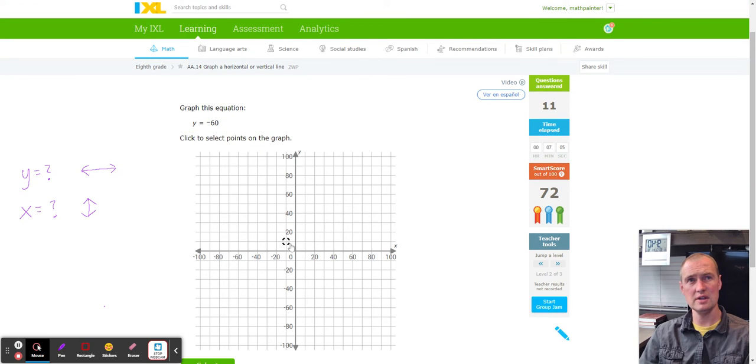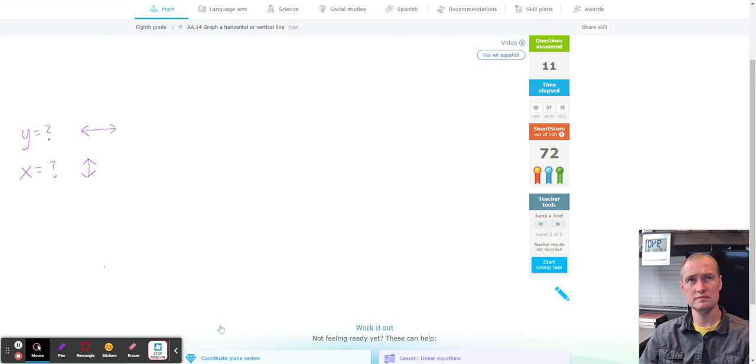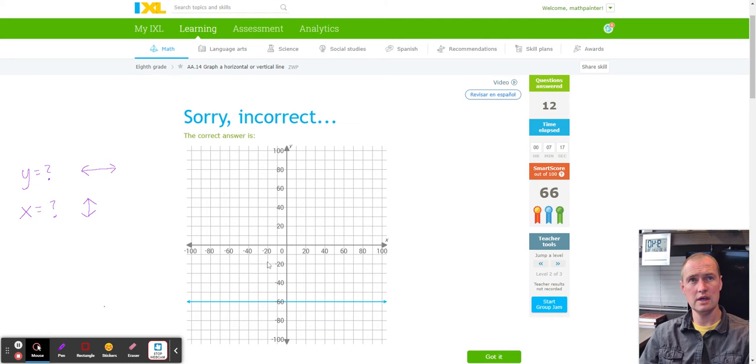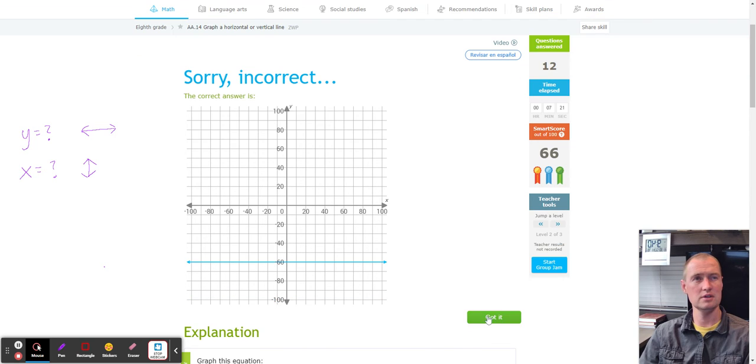Y is equal to negative 60. So negative, it goes by tens, negative 10, negative 20, negative 30, negative 40, negative 50, negative 60. Make the line again go vertical. And I was counting the X. Good one.